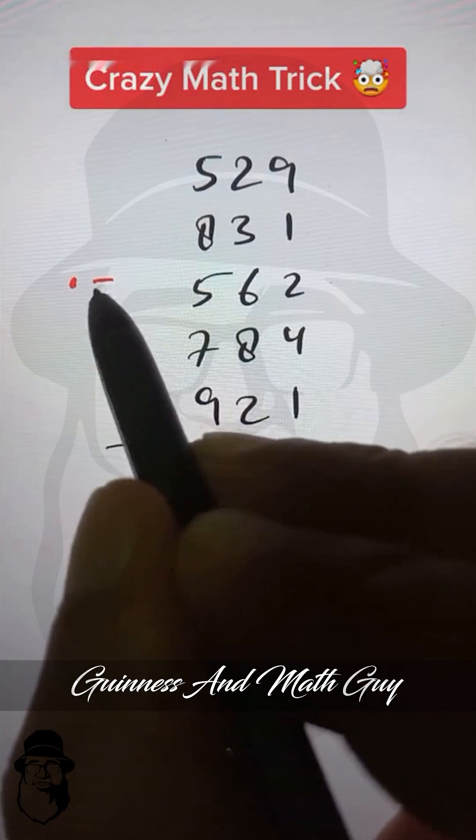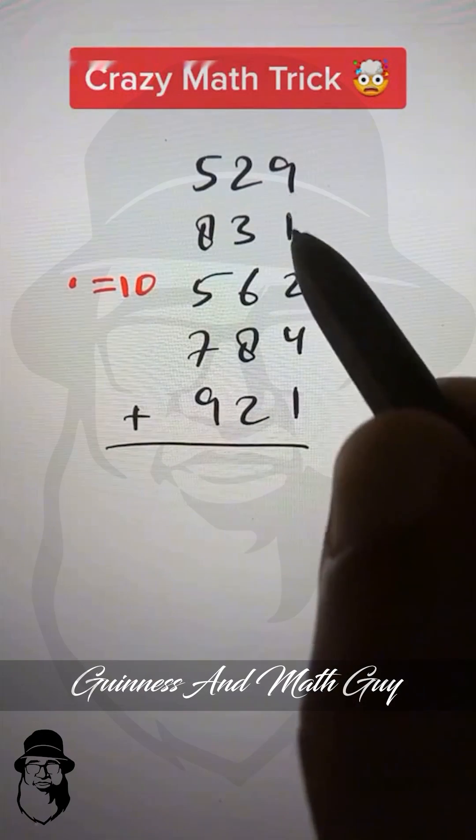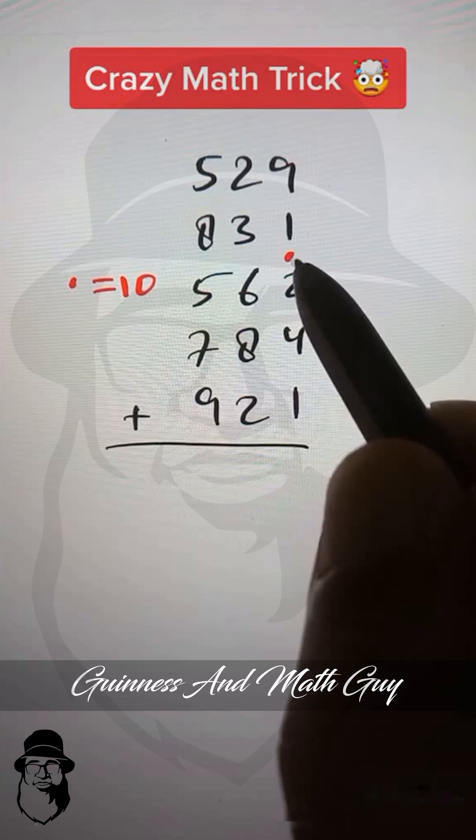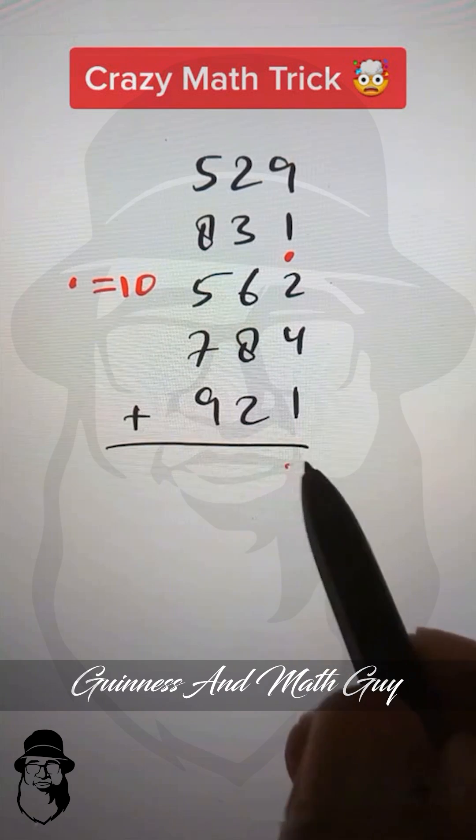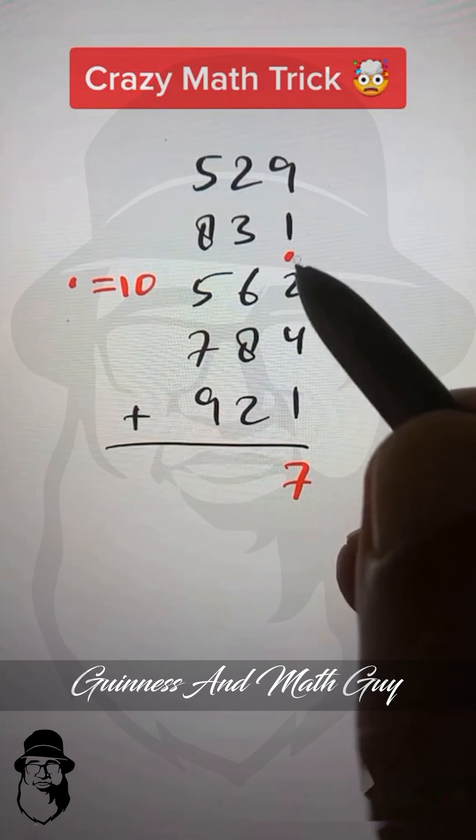Just remember that dot means 10. So 9 plus 1 is 10, we'll put dot. We don't have anything now. 2 plus 4 is 6, 6 plus 1 is 7. And then when we start the next column we...